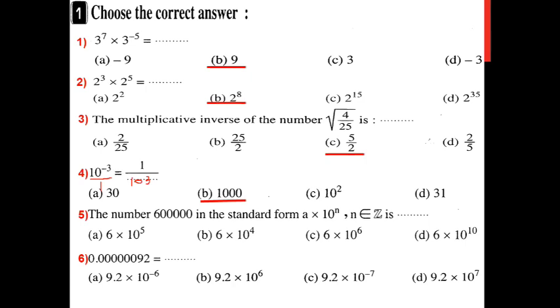I want someone else. Noorhan, you can answer that. The number 600,000 in the standard form. Which one, let me choose here A, B, C, D. B, okay, but let me help you on that. Let's count our zeros here. How many zeros here in 600,000? 5,000?